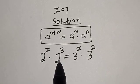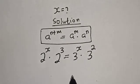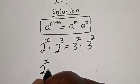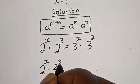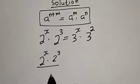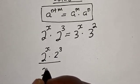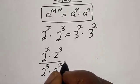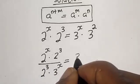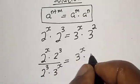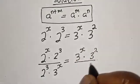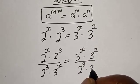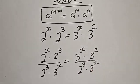Now, let's divide both sides by 2 raised to power 3 and 3 raised to power x. That is: 2 raised to power x times 2 raised to power 3, divided by 2 raised to power 3 times 3 raised to power x, is equal to 3 raised to power x times 3 raised to power 2, divided by 3 raised to power x.